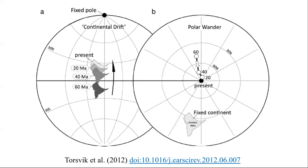This picture is adapted from Torsvik et al. 2012 and illustrates two phenomena: continental drift and polar wandering. Situation A depicts a moving continent — for example, India — with a fixed polar axis. This is continental drift, as the continent drifts steadily northward. Before the term plate tectonics took over, this was described as continental drift.